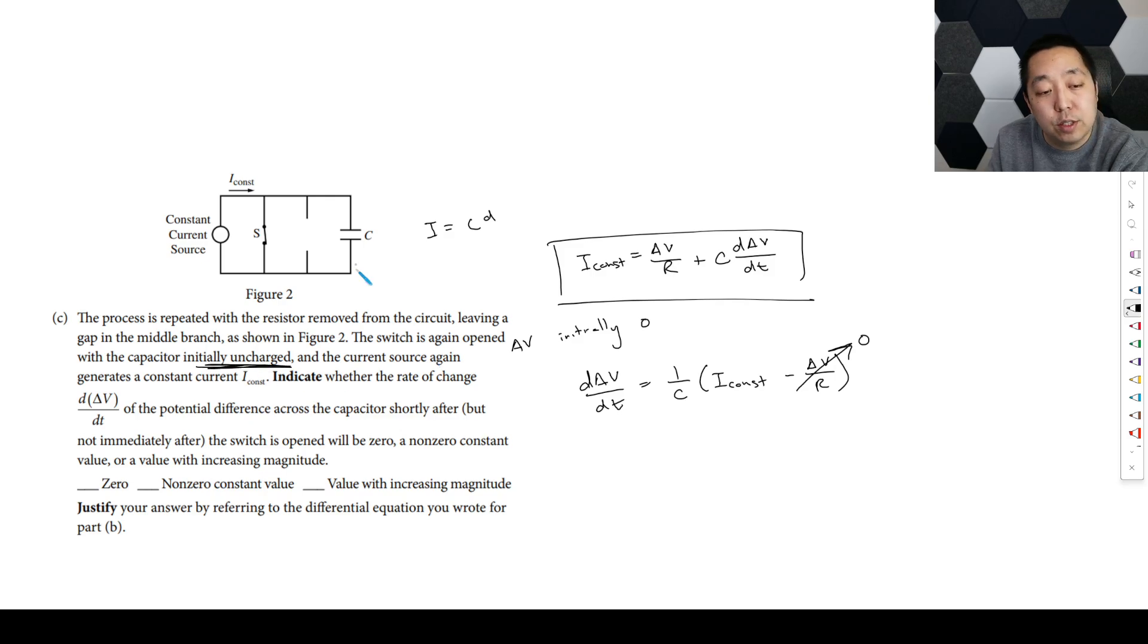Because it was initially uncharged, right? So the delta V was zero, because the charge was zero across the capacitor. So what's going to happen here is now the delta is going to be just I const over C. Well, this is a constant, this is a constant. So it's going to be a non-zero, it's not going to be zero, it's going to be a non-zero constant value. And it's not increasing in magnitude, it's just constant, all of these values are constant. Before it would decrease, this would eventually go to zero. But now it's just going to be constant, because this thing is constant.